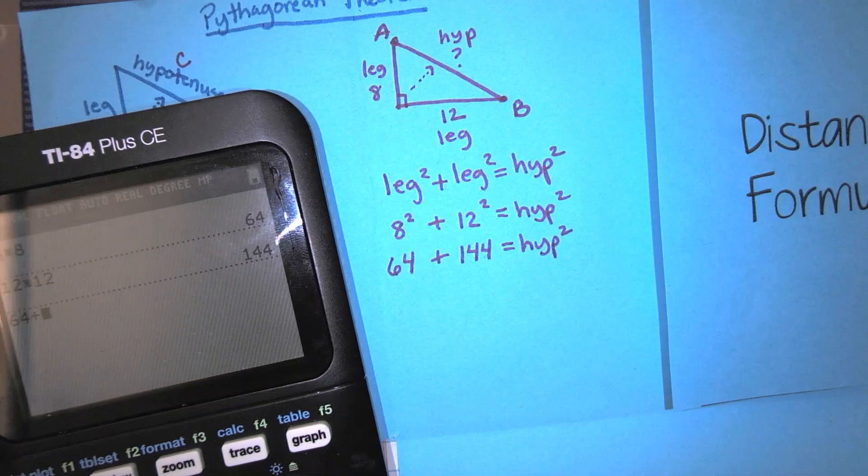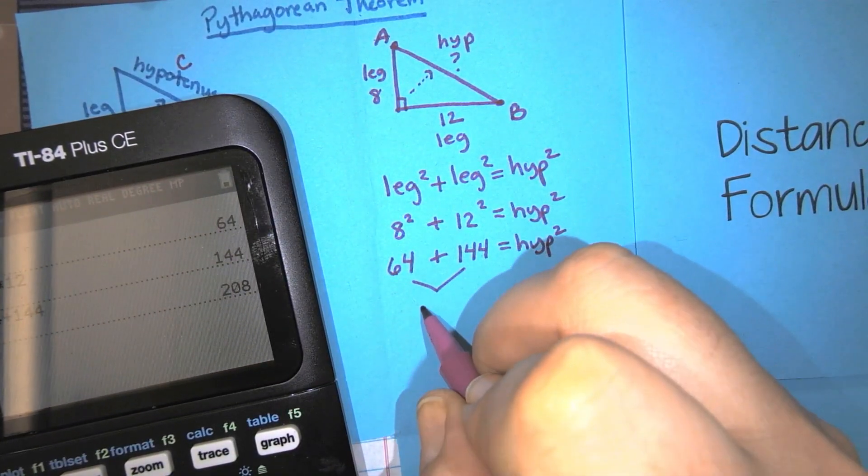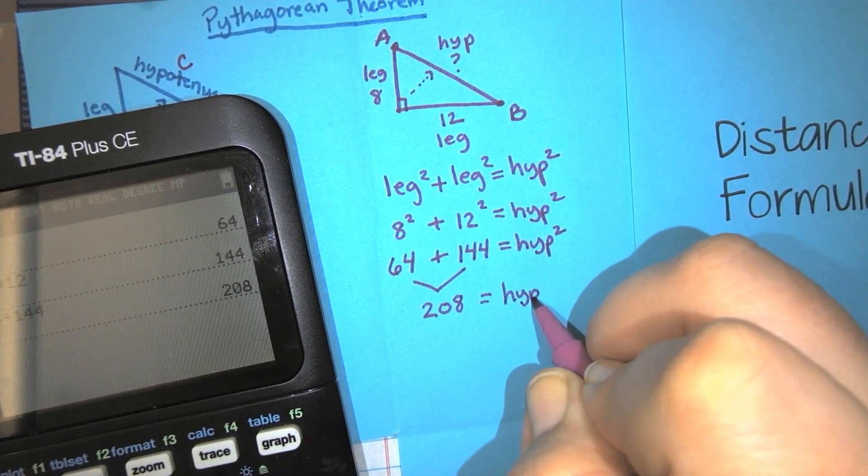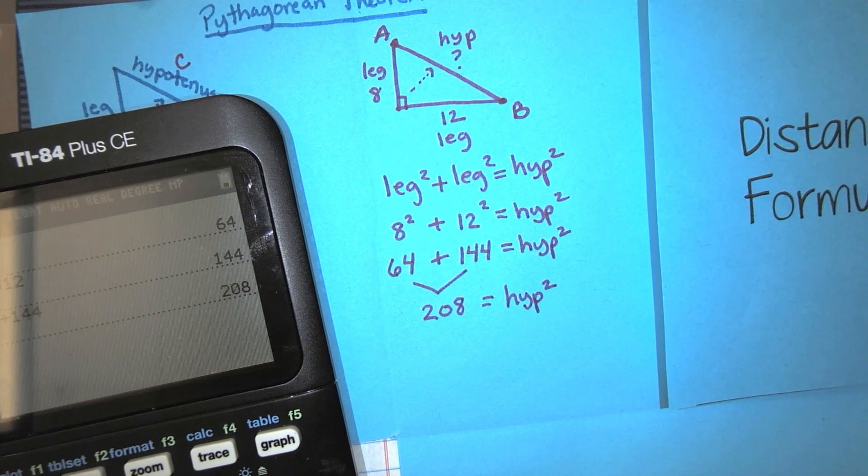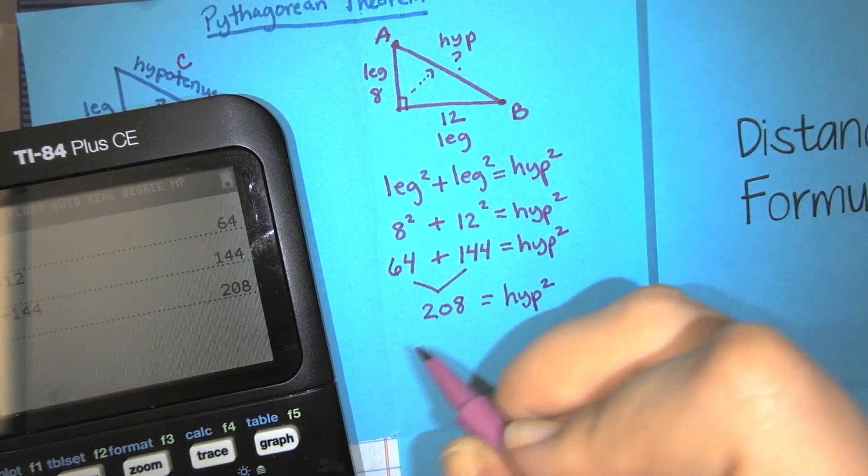So 64 plus 144 is 208. So together, this makes 208. And that's equal to hyp squared. I don't want hyp squared. I want to know the length of hyp. But this is the relationship that I have.